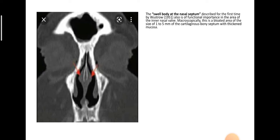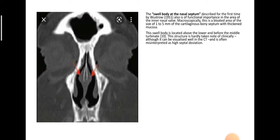What is meant by the swell body of the nasal septum? The swell body of the nasal septum, described for the first time by Vustro, is of functional importance in the area of the inner nasal valve. Microscopically, this is a bloated area around 5 mm thick of the cartilaginous bony septum with thickened mucosa. The swell body of the nasal septum is located above the inferior turbinate, before the middle turbinate, and this structure is hardly noted clinically, although it can be visualized well on CT. It is often misinterpreted as high septal deviation.